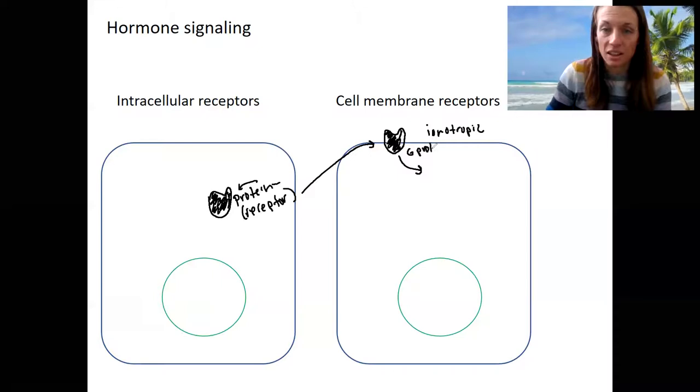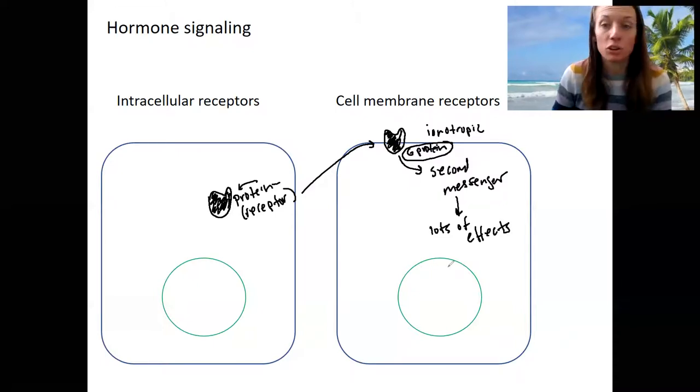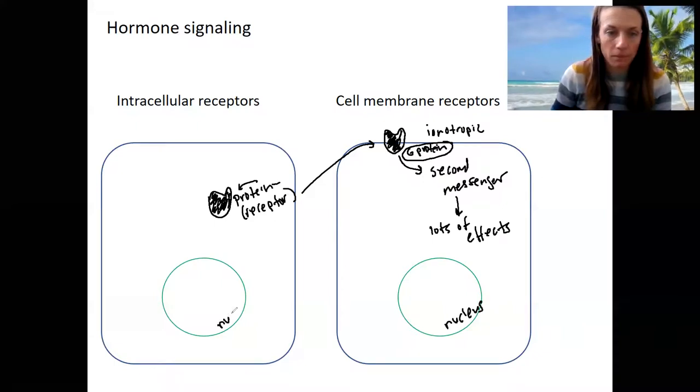So here's a G-protein that is coupled or linked to this cell membrane receptor. It's going to start a signal cascade. A second messenger will be signaled, and that's going to have lots of effects. Could open ion channels, activate other enzymes, could alter gene expression. So this here is our nucleus. I hope that was obvious. This is inside the cell, outside the cell. So that's what happens with cell membrane receptors.